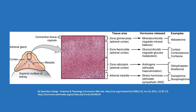Aldosterone helps regulate mineral balance, sodium and potassium, which is important for maintenance of blood pressure and regulating fluid volumes throughout the body. That's a big part of the stress response — keeping blood pressure up so that you can do what you need to do, and if injury or blood loss occurs, you have enough pressure to pump blood to the brain. It's one of the big reasons blood pressure increases under stress.